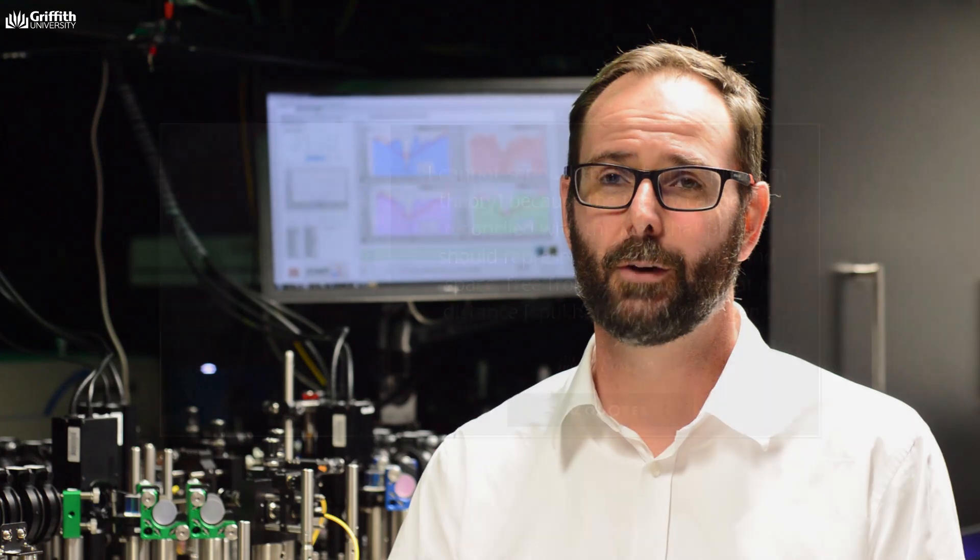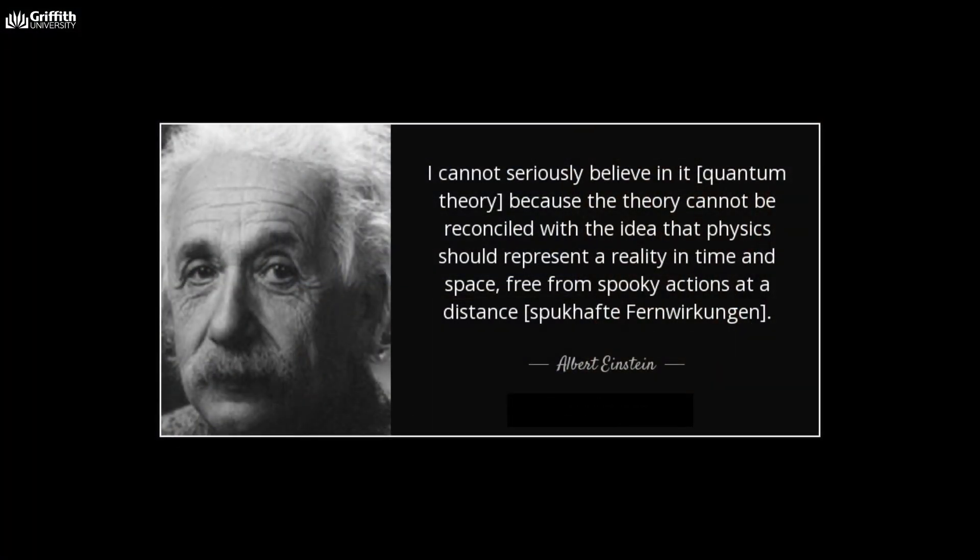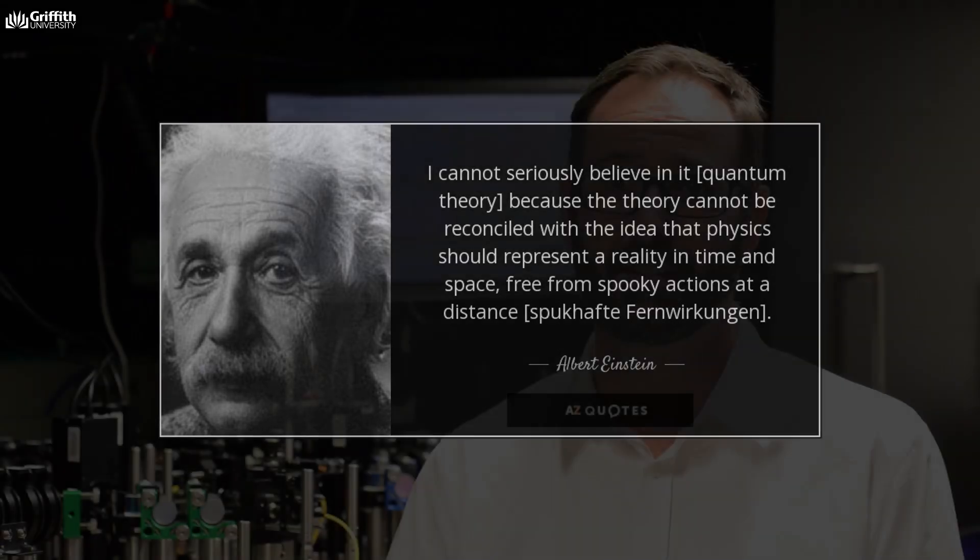Our Big Bell Test experiment will be testing something called quantum steering. Steering was a prediction of Einstein and his colleagues who didn't believe that when you measure one quantum particle, its partner far away would be affected. They came up with a scenario which aimed to prove that this was crazy and inconsistent with the theory of relativity. The quantum steering test actually will test to see whether this is true or not.